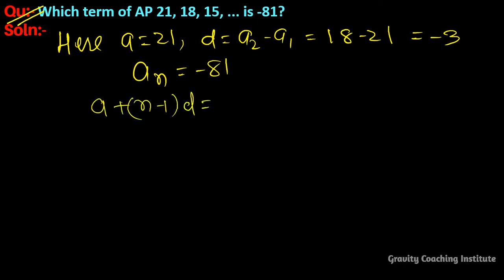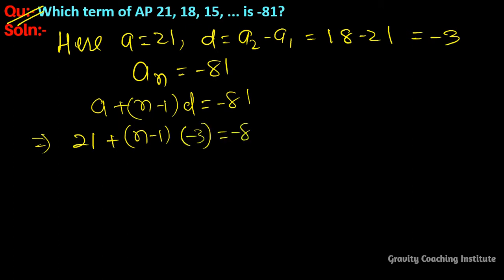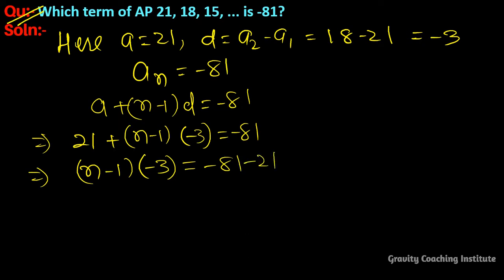We put in the values of a and d to find n. So 21 + (n-1) × (-3) = -81. This implies (n-1) × (-3) = -81 minus 21.